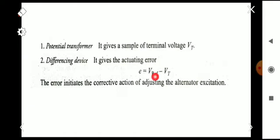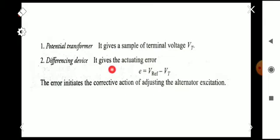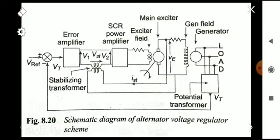The main important components are: first, the potential transformer, which gives a sample of the terminal voltage, denoted as Vt. The second one is the differencing device, which produces an actuating error signal equal to V_reference minus Vt.